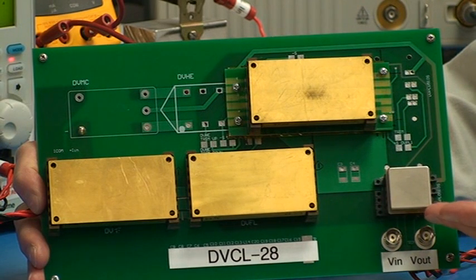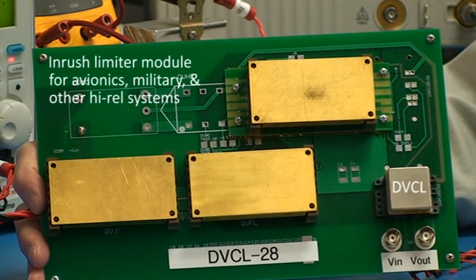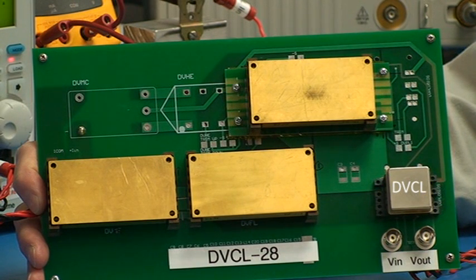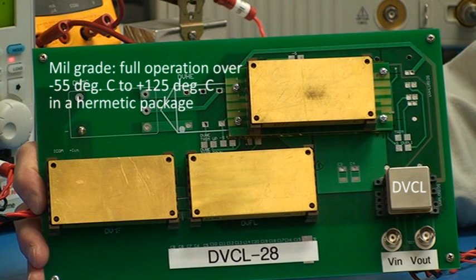The DVCL, shown here in this typical test board, is an Inrush Current Limiter Module designed for use in high reliability environments, including avionics and military applications. This unit operates at full power over the military temperature range of minus 55 degrees to 125 degrees Celsius.